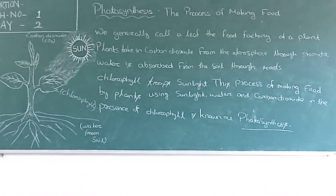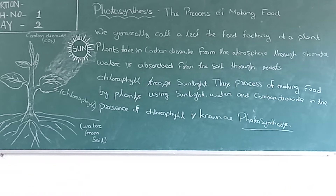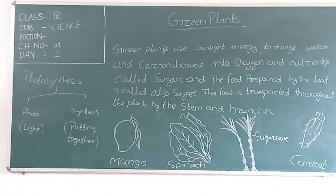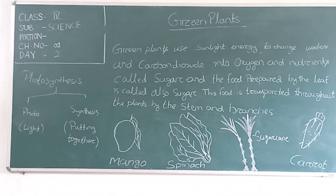Photosynthesis requires sunlight, chlorophyll, water and carbon dioxide gas. Chlorophyll is a substance found in all green plants, especially in the leaves. The word photosynthesis comes from two words: photo and synthesis. Photo meaning light and synthesis meaning putting together.